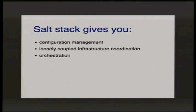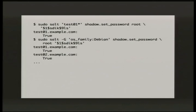One of the things I use Salt for is remote execution. Salt comes with a command line tool called salt that lets you do stuff on collections of servers. As you can see, the first argument is what I'm targeting, and I'm using a shadow module to set the root password — it returns output showing what's true. You can target more minions using the grain system to target all Debian-like systems. Once I'm happy it worked on test01, I go and do it on lots of other servers.